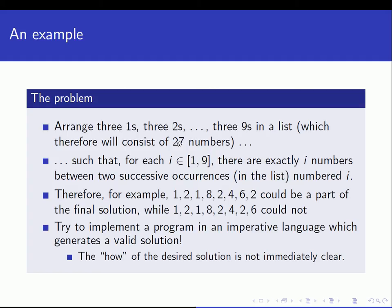The constraint is that, for each i in the range one to nine, there are exactly i numbers between two successive occurrences of the number i. So for example, the sequence 1, 2, 1, 8, 2, 4, 6, 2 could be part of the final solution, because this doesn't contain 27 numbers — it only contains eight numbers — but if we look at the sequence, we have a one appearing and then we need to have exactly one number before we get one again.